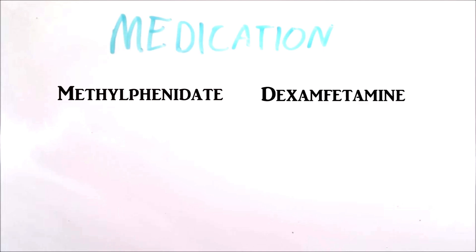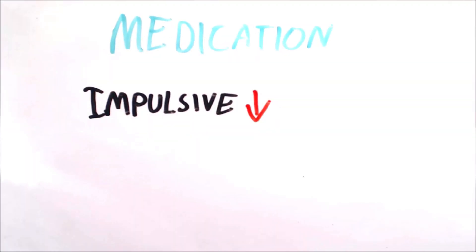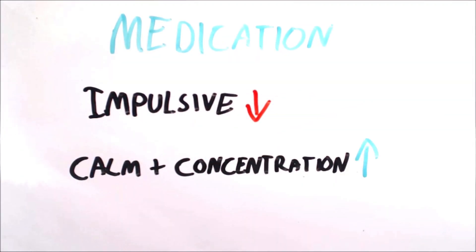Medications can also be used. There are four types: methylphenidate, dexamphetamine, lisdexamphetamine and atomoxetine. These medications aim to allow the patient to feel less impulsive and to feel calm to allow them to concentrate.